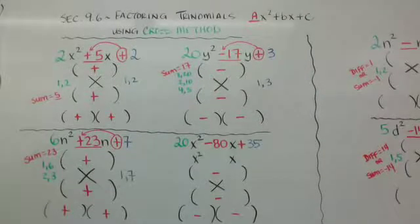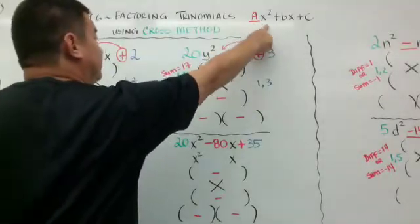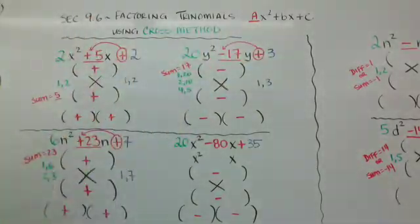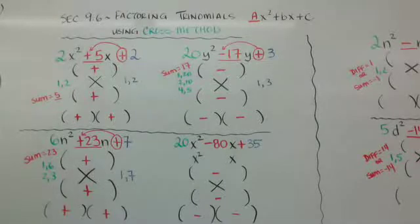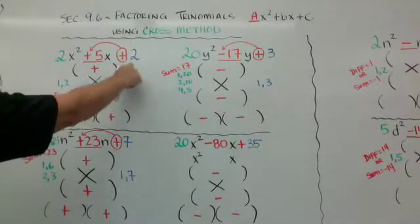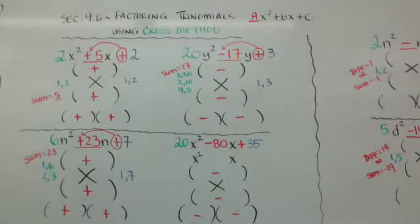Hi guys, this is section 9.6, which is factoring trinomials that have a number other than 1 in front of the x squared using the cross method. There are various methods to use — I'll show you the box method in another video. I have four examples with a positive c and four examples on the other side with a negative c. The ones with the positive c are going to be a little easier, and you'll see why.